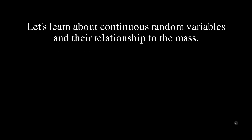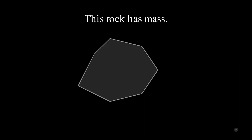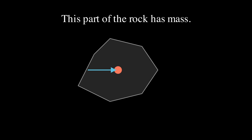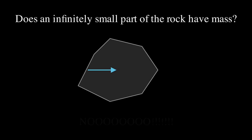Now let's learn about continuous random variables and their relationship to mass. A continuous random variable is something like height that can take decimal values — 66, 67, or any number in between. So imagine a rock: this rock has mass, and this part of the rock has mass, and these even smaller parts of the rock have mass. But does an infinitely small part of the rock have mass? No — one point does not have any mass. A zero-dimensional point has no volume, so it cannot have any mass.